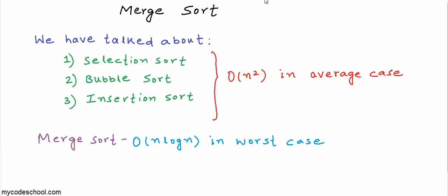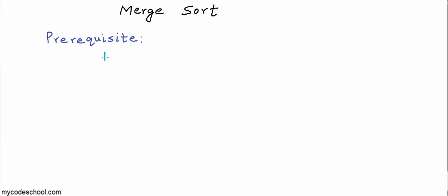Big O of n log n time complexity in worst case is definitely a lot better, a lot faster than big O of n squared in average case. So in this lesson we will study, discuss, and analyze merge sort algorithm. There is one prerequisite for this lesson: you should have at least heard about recursion as a programming concept. Okay, so let's get started.